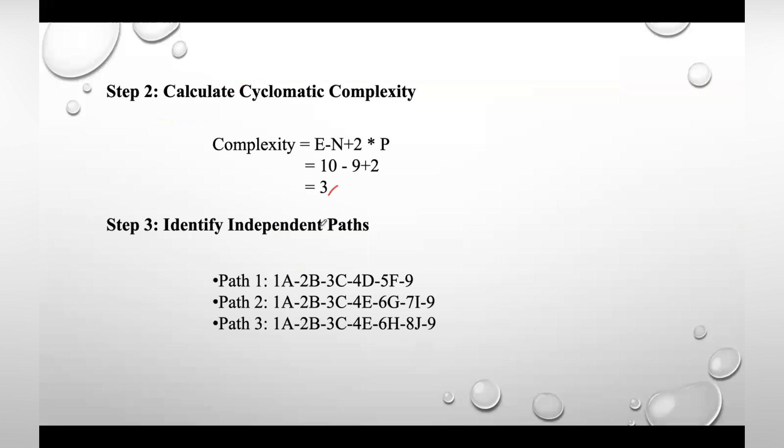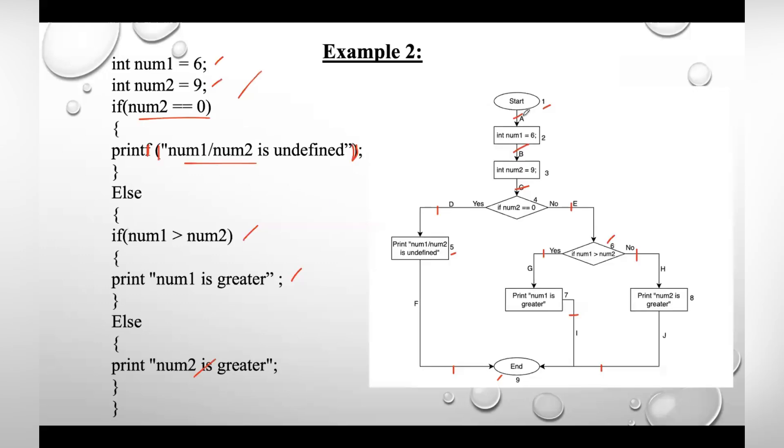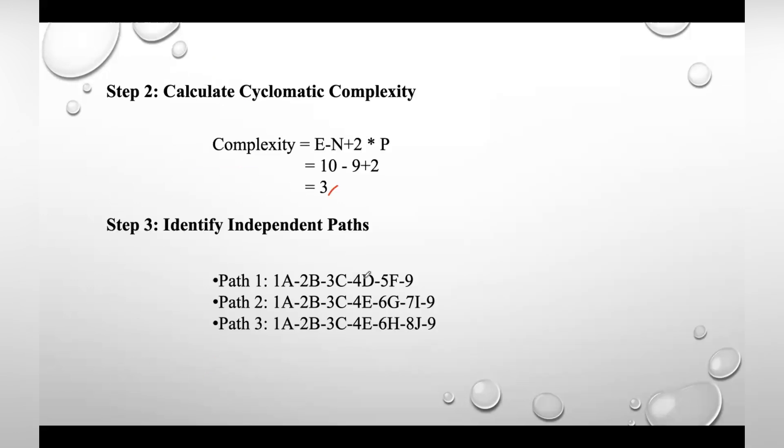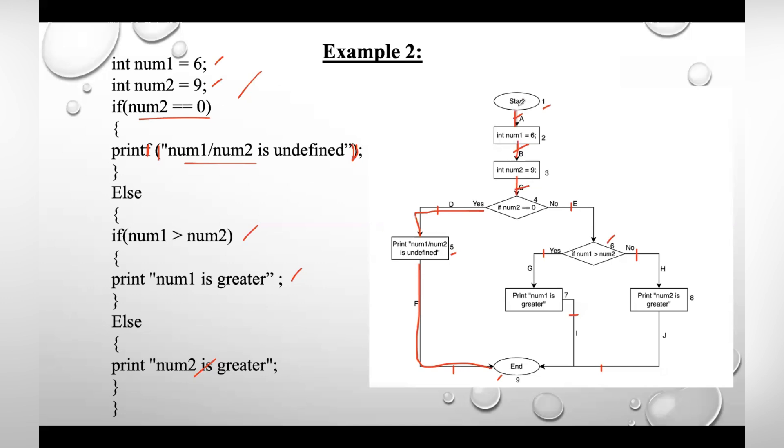So 10 minus 9 plus 2 which gives you 3. It indicates that we need to design 3 test cases. Find out independent paths. Here independent path 1 is 1A-2B-3C-4D-5F-9. So that is your first one. Second path, so here I am taking this block as well as this value also, as we consider the flow graph in that way.